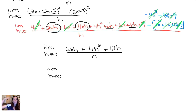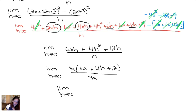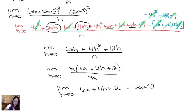If you did plug in h equals 0, you would have gotten 0 over 0, which means do more work. That's why we did all of that work — our goal is to try to get it so it's not 0 over 0 anymore. It's still 0 over 0 if I plug in 0 here, so I'm going to have to try to get rid of some of those h's so I don't get 0 anymore. I might factor out an h, the h's cancel, and we plug in h equals 0. We get 6x plus 12.